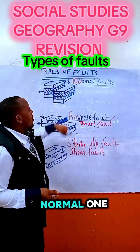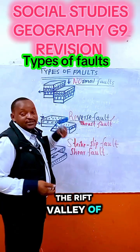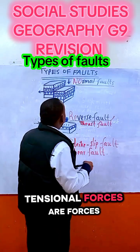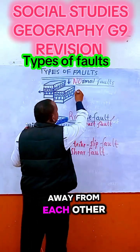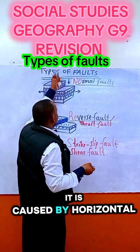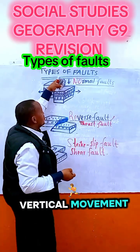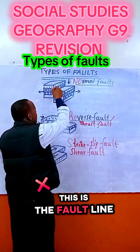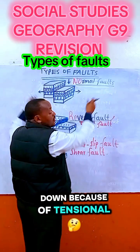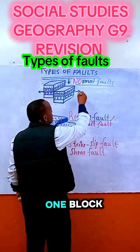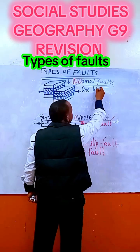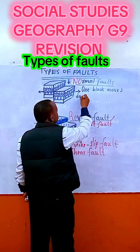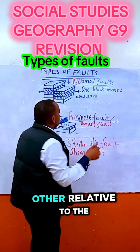This one is the normal fault. A good example is the Rift Valley of Eastern Africa. In this one, it is caused by tensional forces — forces which pull the land away from each other. It is a horizontal movement because the block here was pushed down. Can you see the fault line? One block moves downward.